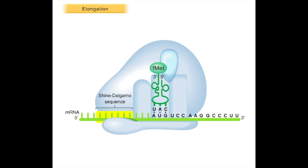As initiation concluded, FMET tRNA was hydrogen bonded to AUG in the P site of the ribosome. The next codon is in the A site.